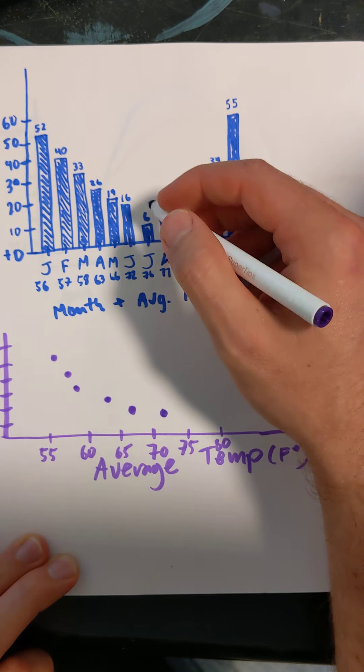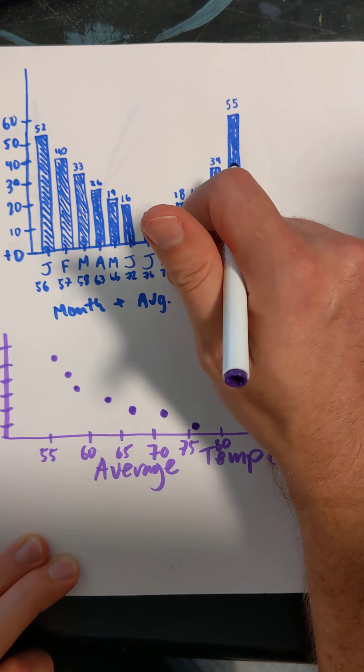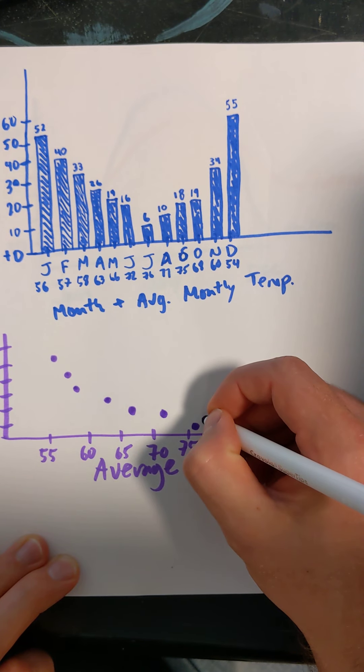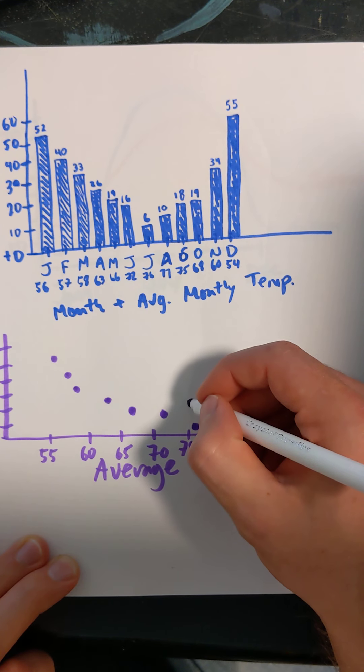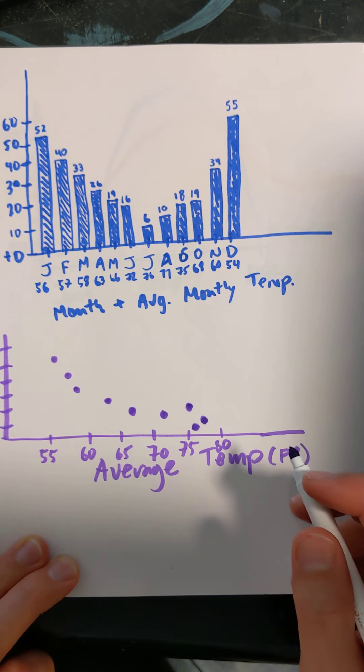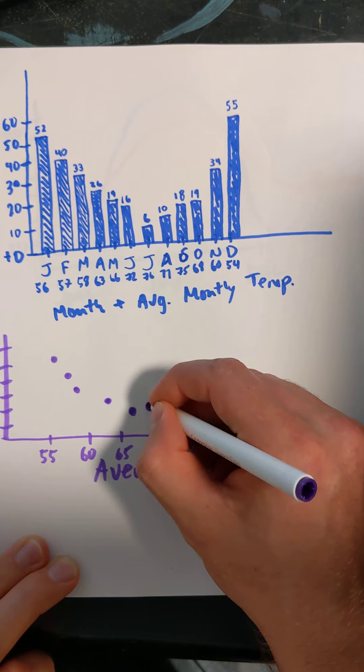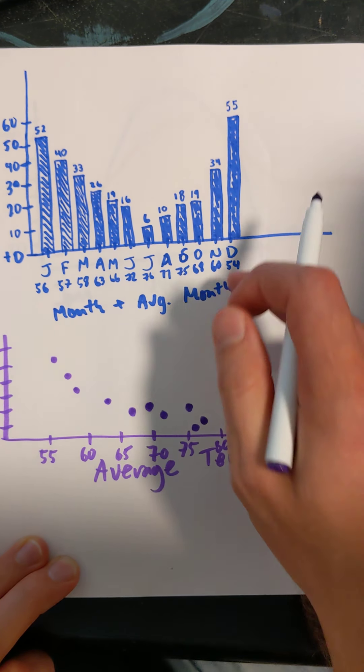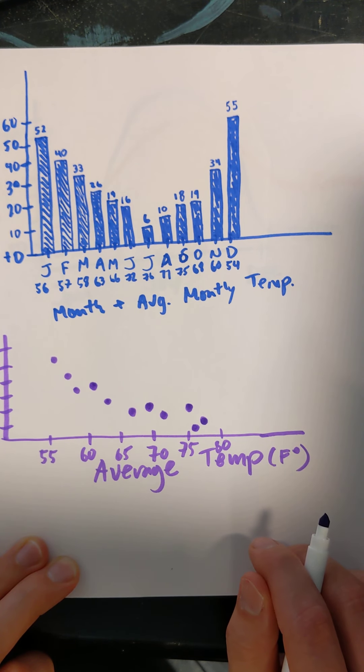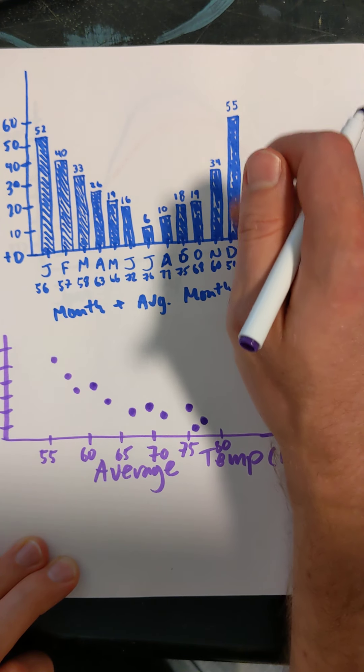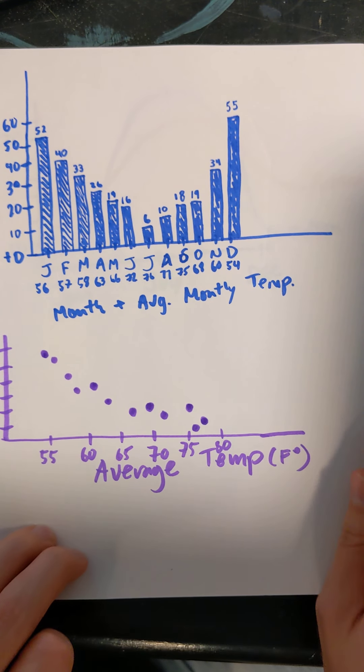76, 6. Somewhere in there. 77, 10. Like about there. 75, 18. About there. 68, 19. About there. 60, 34. About there. And 54, 55. Okay.